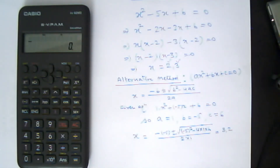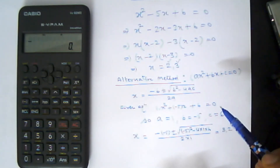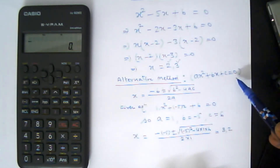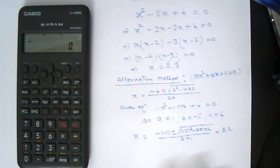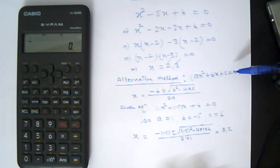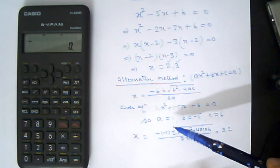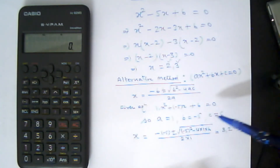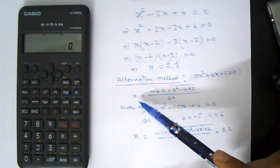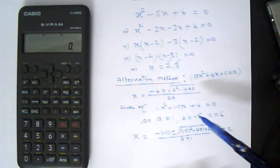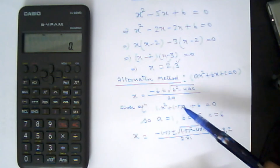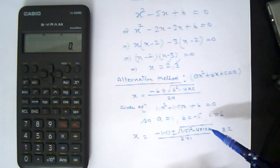The same equation can also be solved using the direct formula. The standard form of a quadratic equation is ax² + bx + c = 0. Comparing our equation x² - 5x + 6 = 0 with this, we get a = 1, b = -5, and c = 6. The direct formula for finding the roots is x = (-b ± √(b² - 4ac)) / 2a.